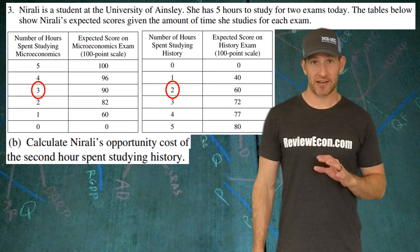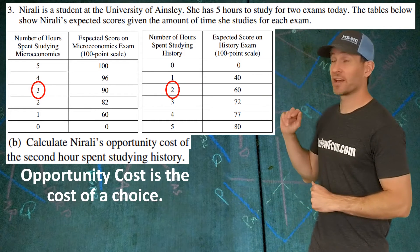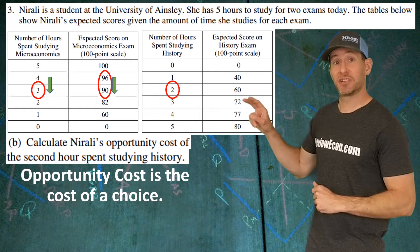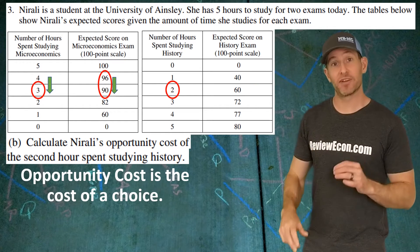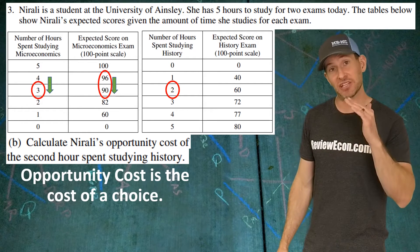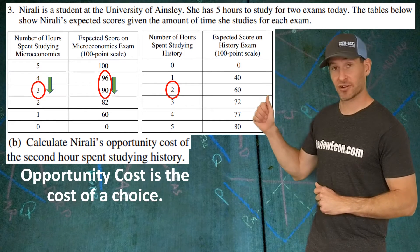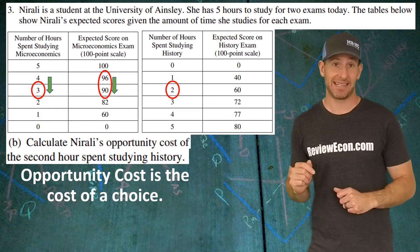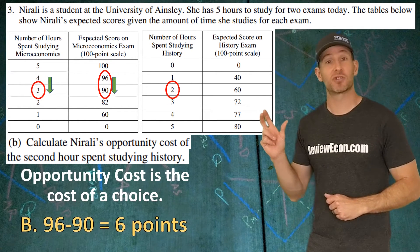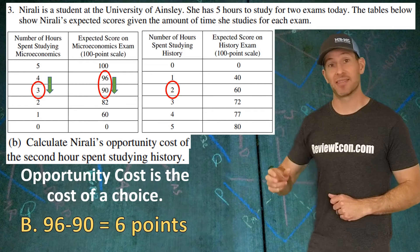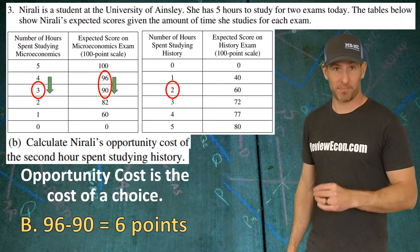For part B, we need to look at Nirali's opportunity cost for that additional hour of history studying. Take a look at the score that Nirali would have had if she had been able to study an extra hour of economics. Four hours of economics studying would have given her a score of 96, but when she goes down to three hours in order to get that second hour of studying history, she drops down to a score of 90. You take the 96 score she would have had with four hours and subtract the 90 points scored with three hours of studying.